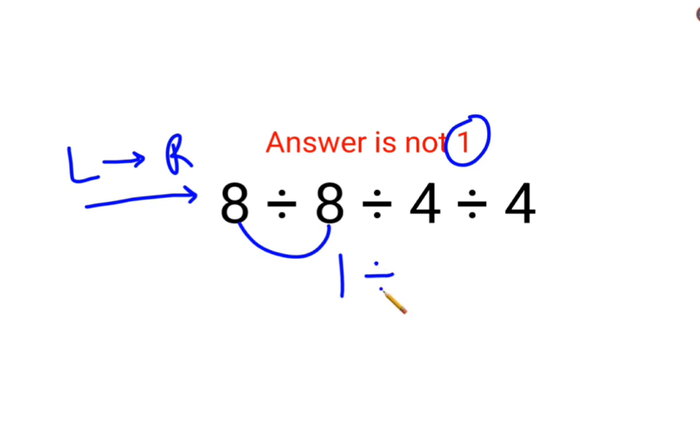So first we'll do 8 divided by 8, which is 1 divided by 4 divided by 4. So this is 1 divided by 4 is 1 upon 4 divided by 4. Now when you have a fraction involved, we will follow the acronym of KCF.